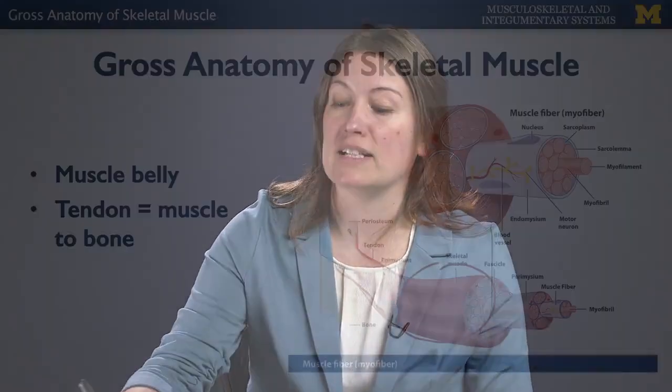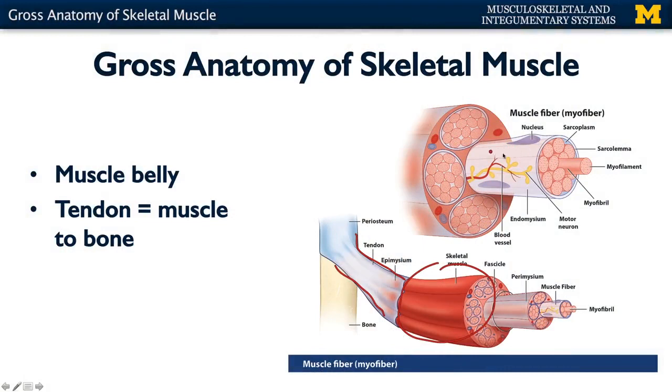So when this muscle contracts, it allows for the bone to move. The muscle belly is composed of skeletal muscle cells, and we'll get into more detail on those specifics in a moment. All of those muscle cells are surrounded by differing levels of connective tissue, and that connective tissue all comes together to form the tendon.